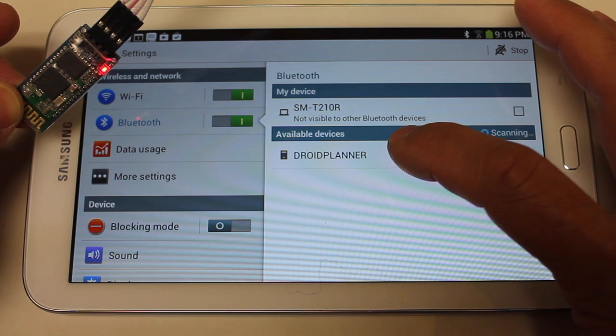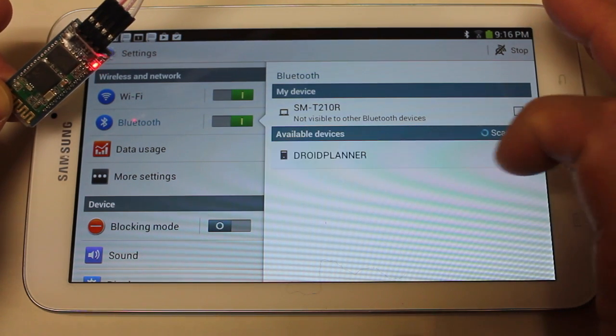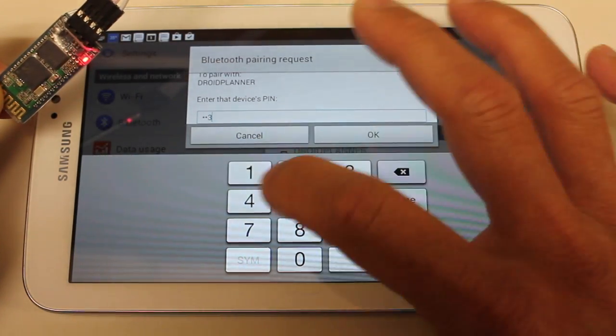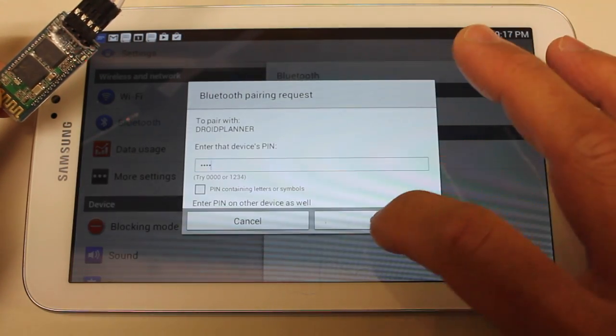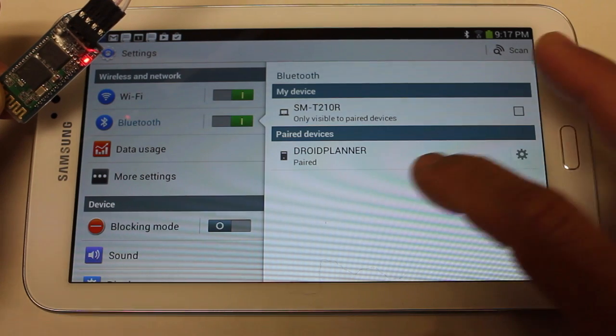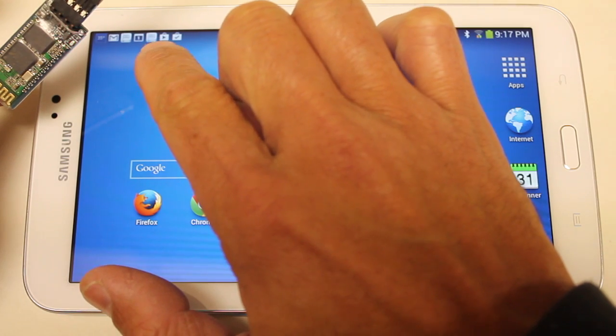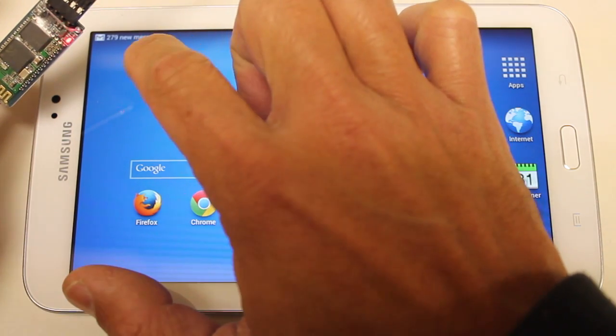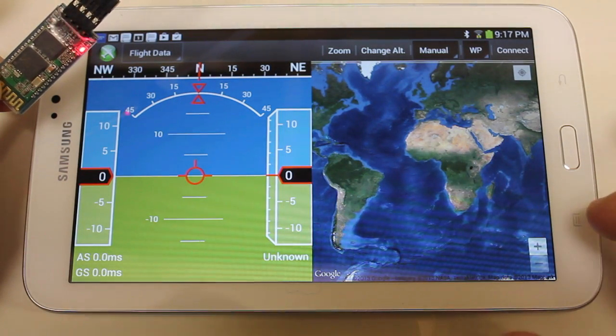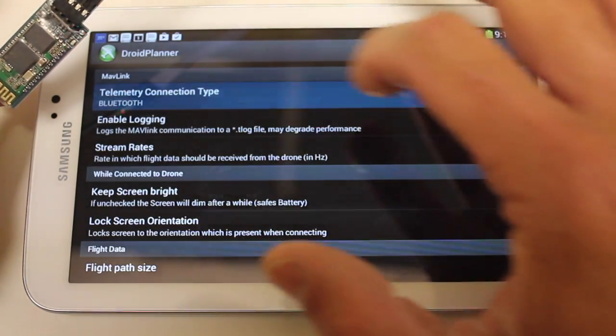Okay, so you can see there's the Droid Planner Bluetooth module, which is this guy. We changed the name. So I'm going to go ahead and pair. Hit OK. You can see we're paired. Here we have the Droid Planner app. Go ahead and launch that.